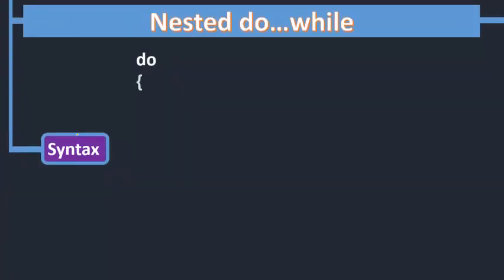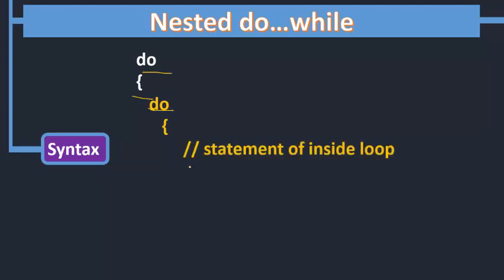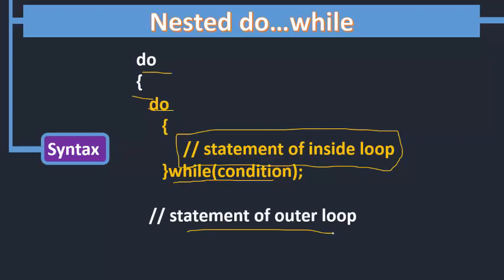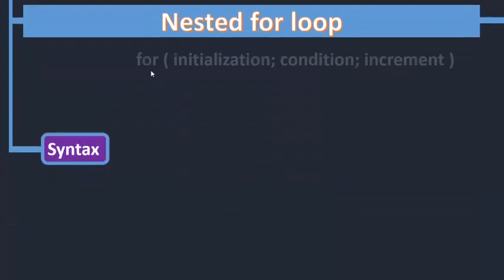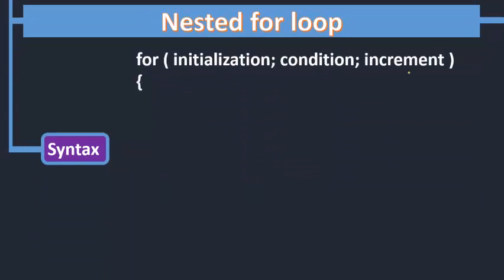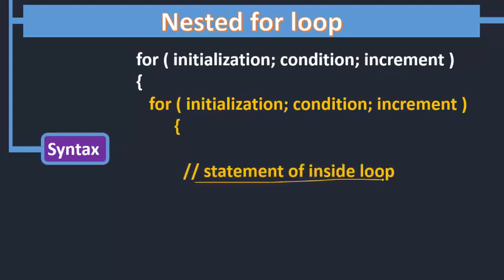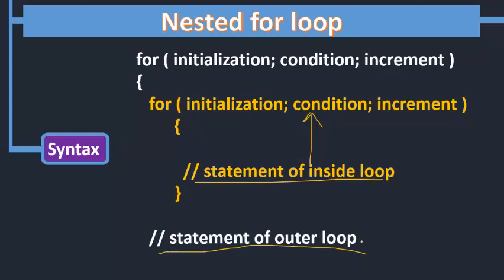Similarly, in a nested do-while, you start a do block, and inside its body you start another loop. The statements within the inner loop belong to the inner loop, and the while condition for the inner loop closes it. Then the statements of the outer loop follow, and the final while condition belongs to the outer do statement. For a nested for loop, the outer for has its initialization, condition, and increment, and within it you specify another initialization, condition, and increment for the inner for loop. The innermost statements belong to the inner loop, and after the inner loop closes, the remaining statements belong to the outer loop.